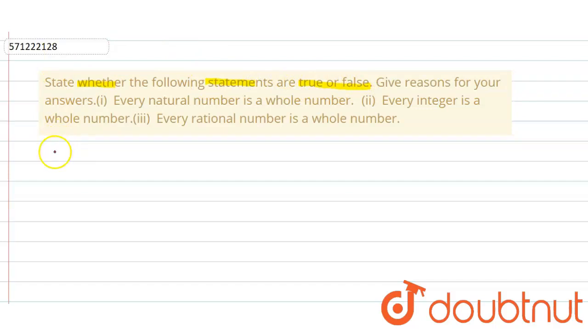We take the first part, which is every natural number is a whole number. That's true. We can say that it's true.